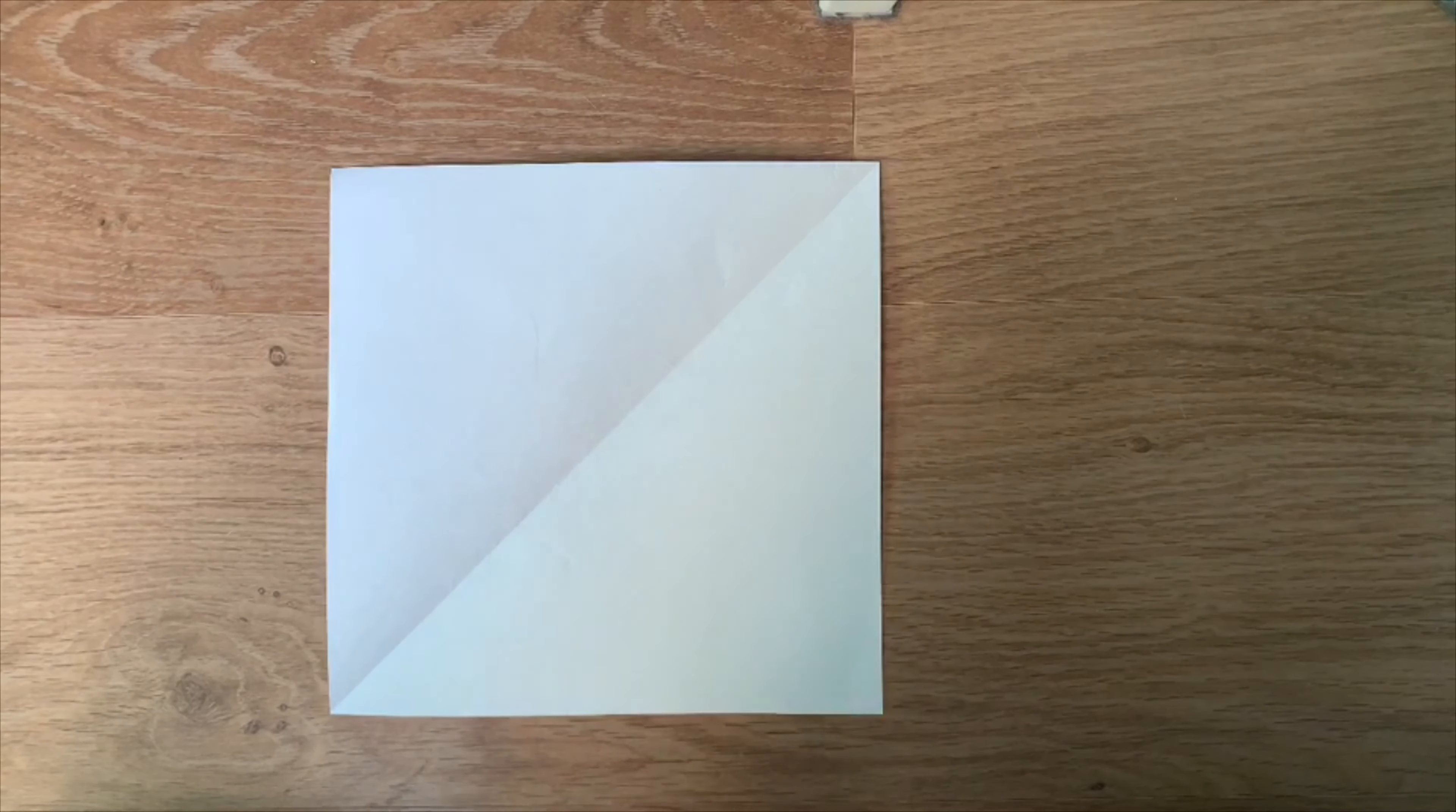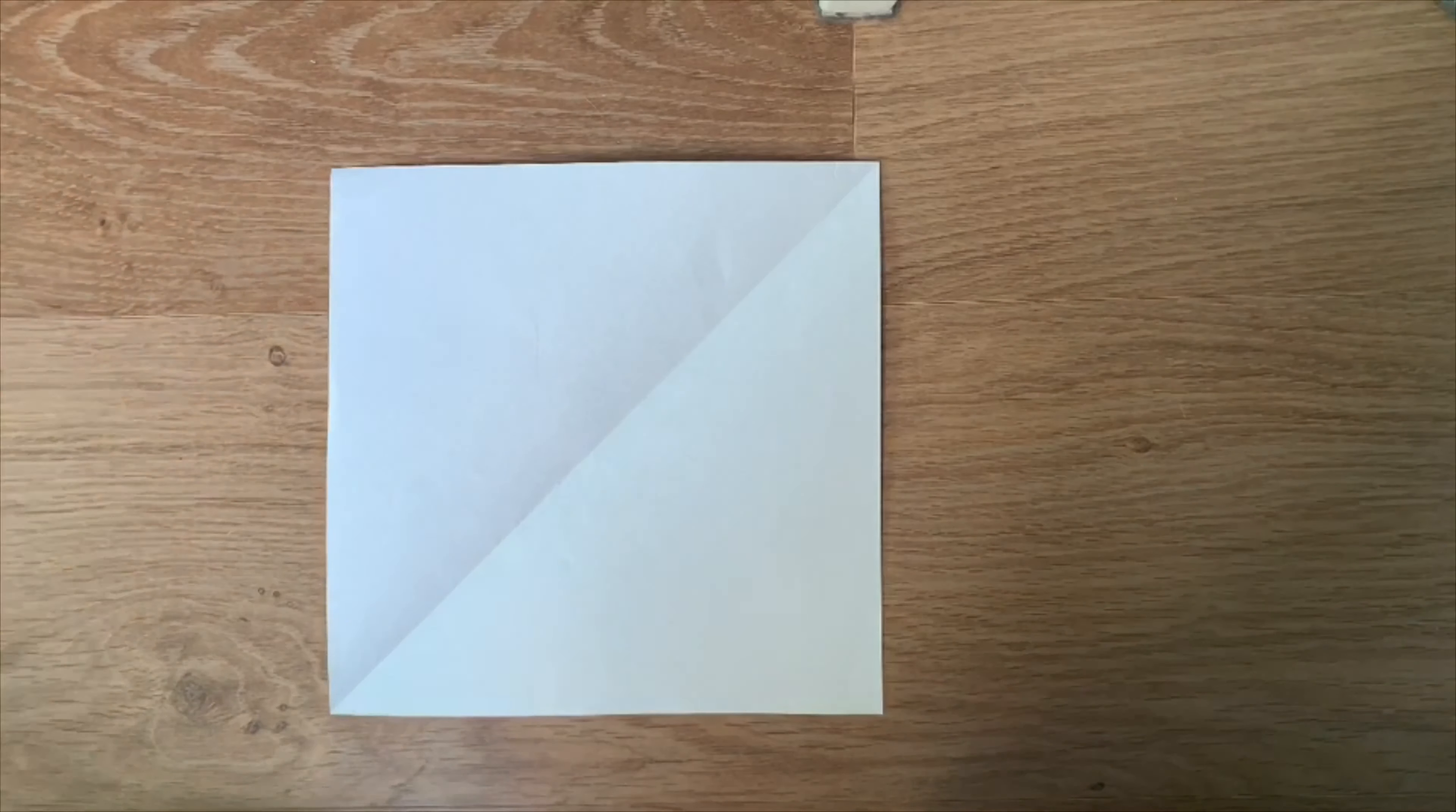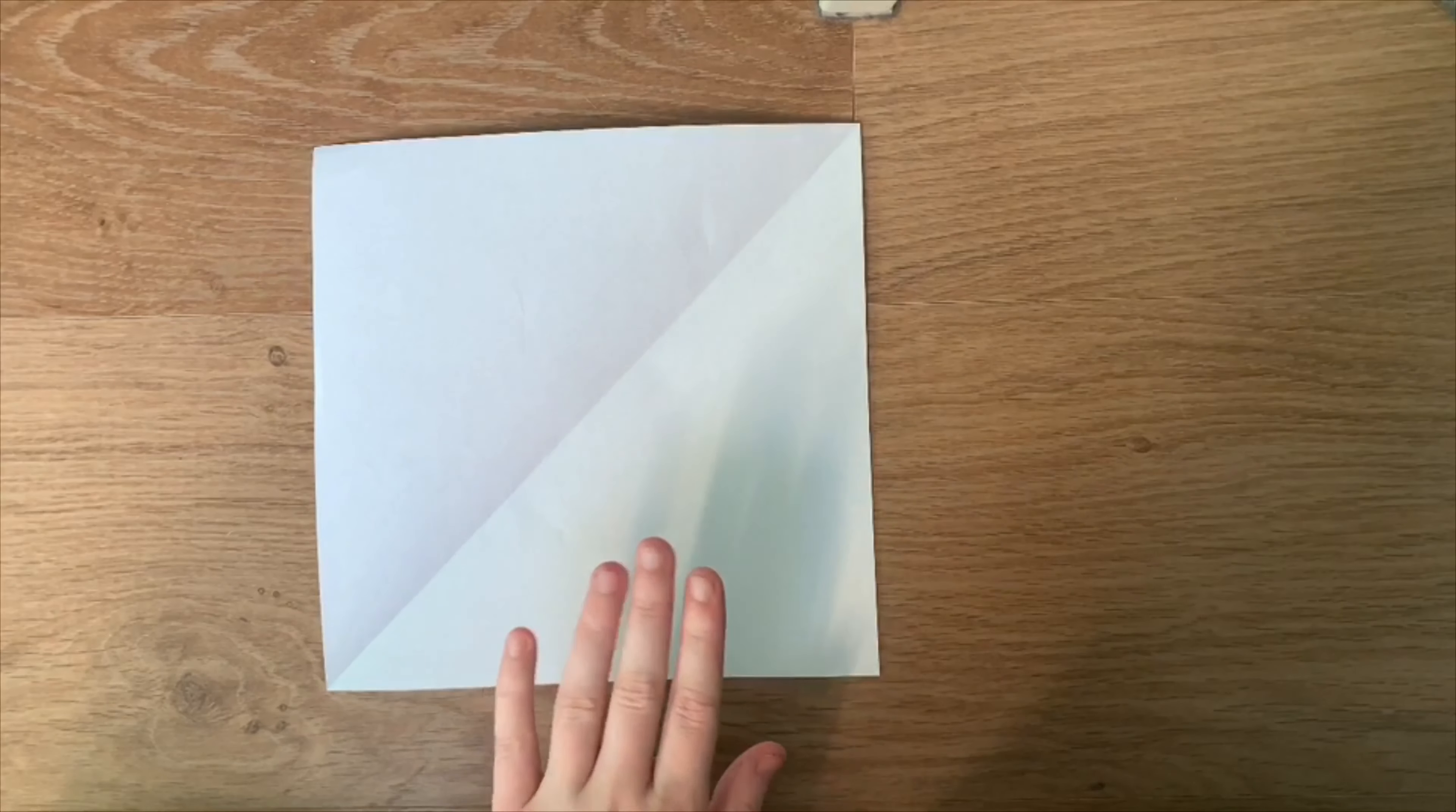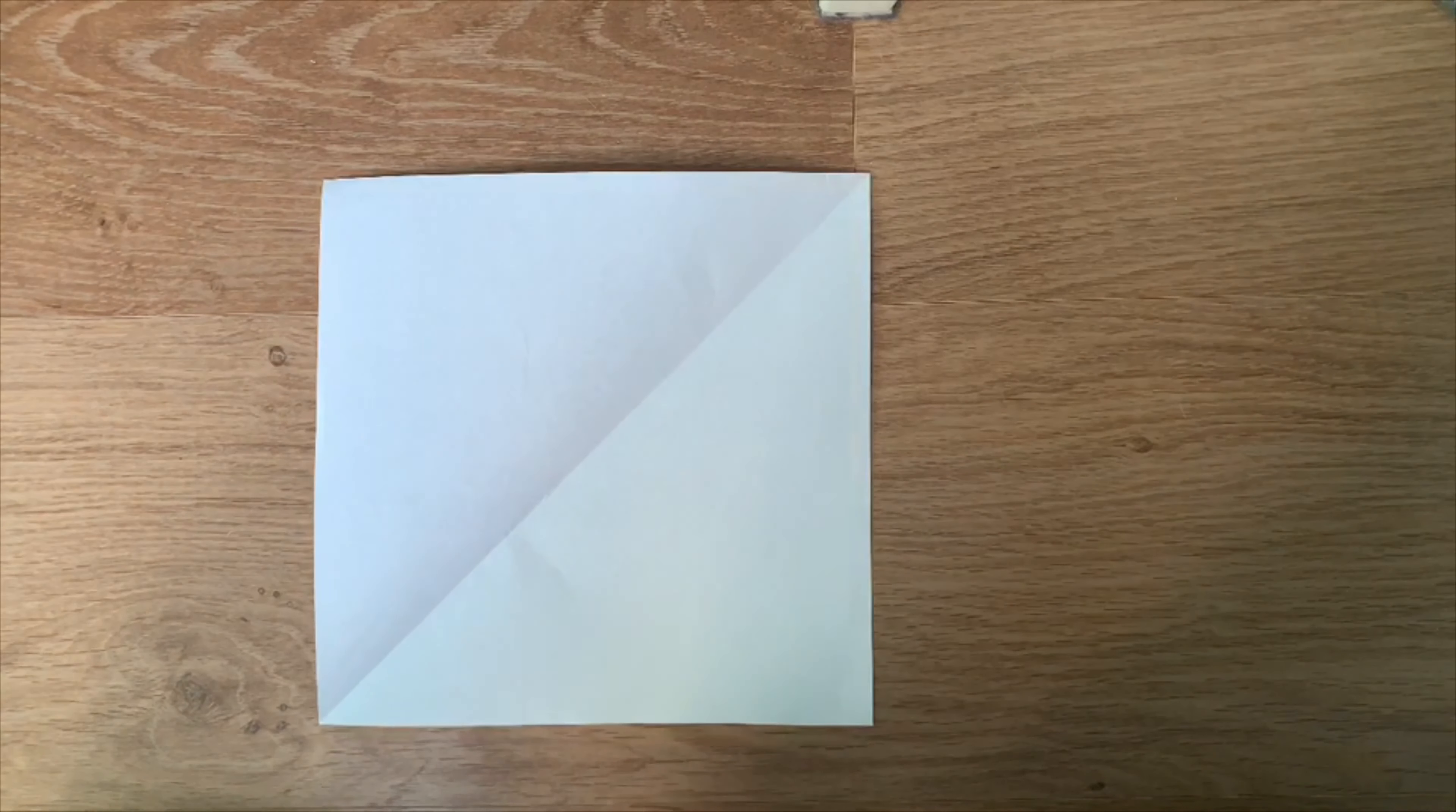For our second origami animal, we will be making an owl. It may look like this. I've already skipped ahead to making the square, and if you need to go back and look at how to do that, feel free to rewind the video.